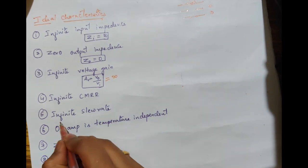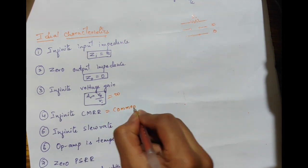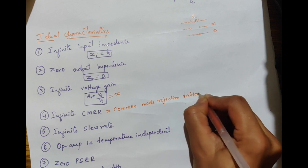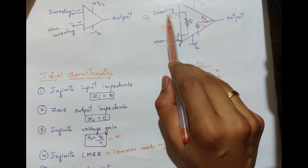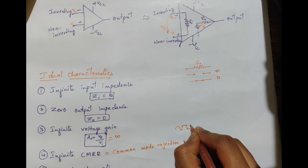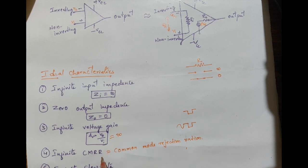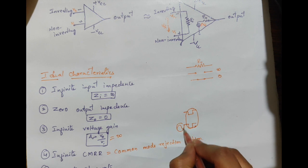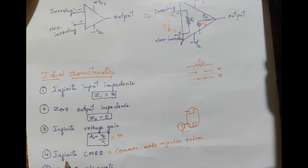The fourth characteristic is infinite CMRR, where CMRR stands for Common Mode Rejection Ratio. This is the ability of the op-amp to reject common signals between the non-inverting terminal and the inverting terminal. For example, if the non-inverting terminal has a sinusoidal signal and a square wave, and the inverting terminal has only the square wave, the CMRR characteristic will reject the common square wave signal and amplify only the sinusoidal signal. Therefore the value of CMRR should be made infinite.